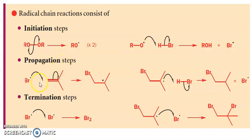In propagation steps, Br radicals attack the double bonds. These double bonds shift here, and one electron and one electron form bonds. These radicals further react with HBr, forming this product.